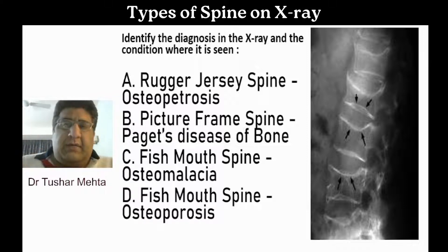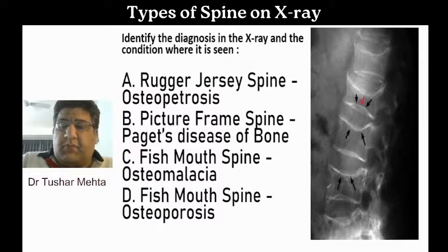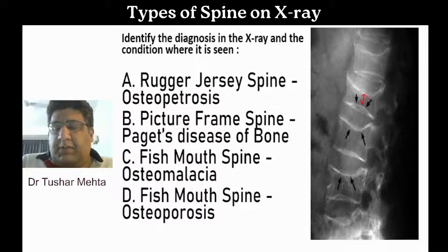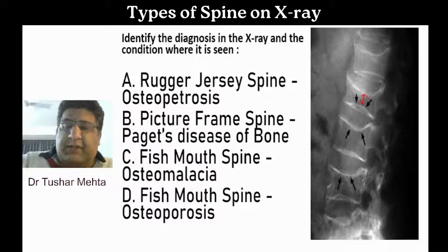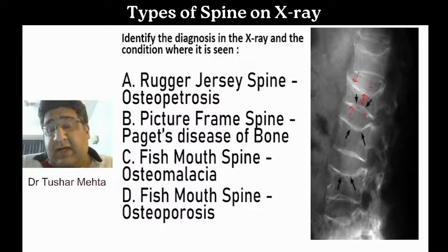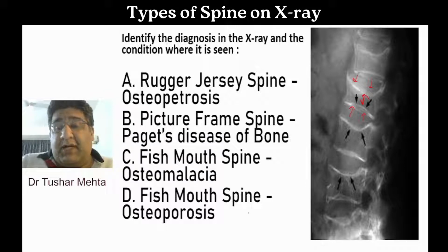This is a clear-cut image-based question where you can see the decrease in the vertebral body height, probably because of the central collapse compression fracture of the vertebral body. Apart from that, you can see that the superior end plate is concave and the inferior end plate is concave — we're dealing with a bi-concave vertebra.